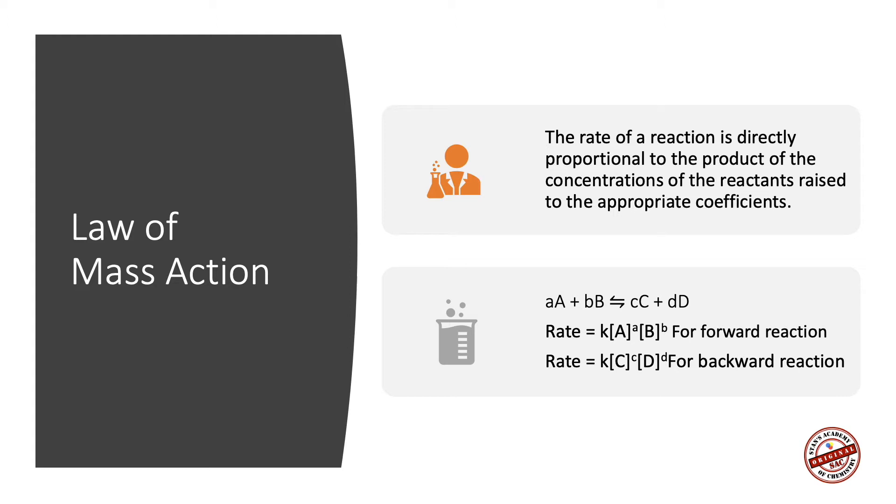For the reaction A plus B reversibly giving you C and D, the rate of the forward reaction is equal to K into concentration of A raised to A into concentration of B raised to B. The rate of the backward reaction is equal to K into concentration of C raised to C into concentration of D raised to D.